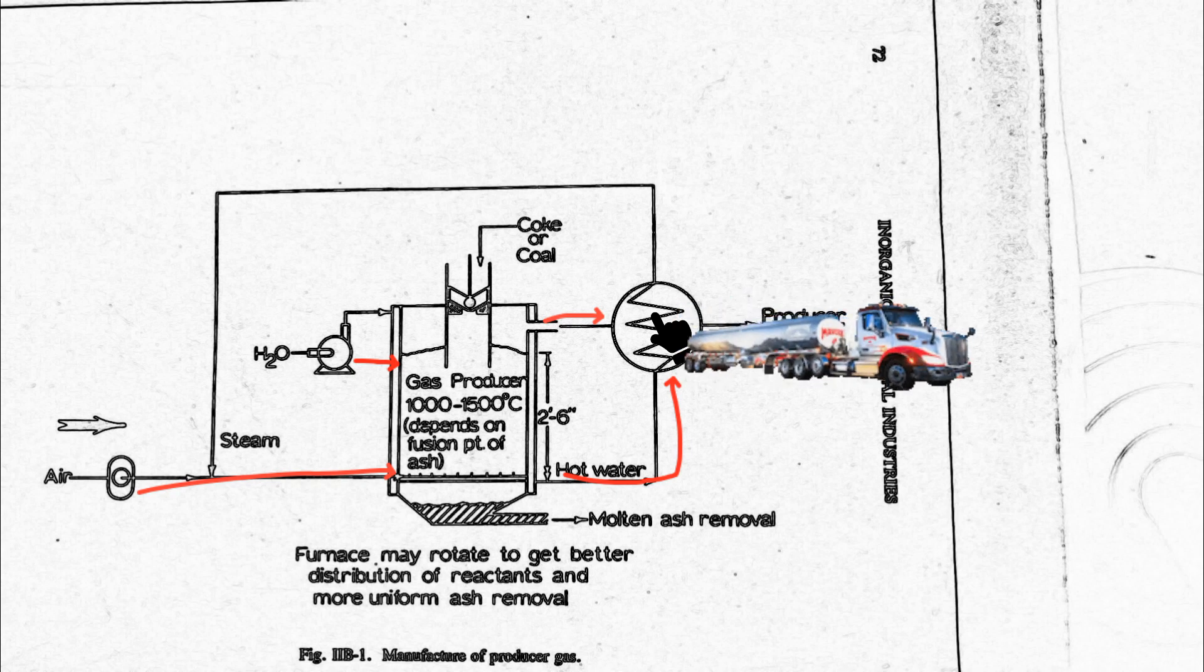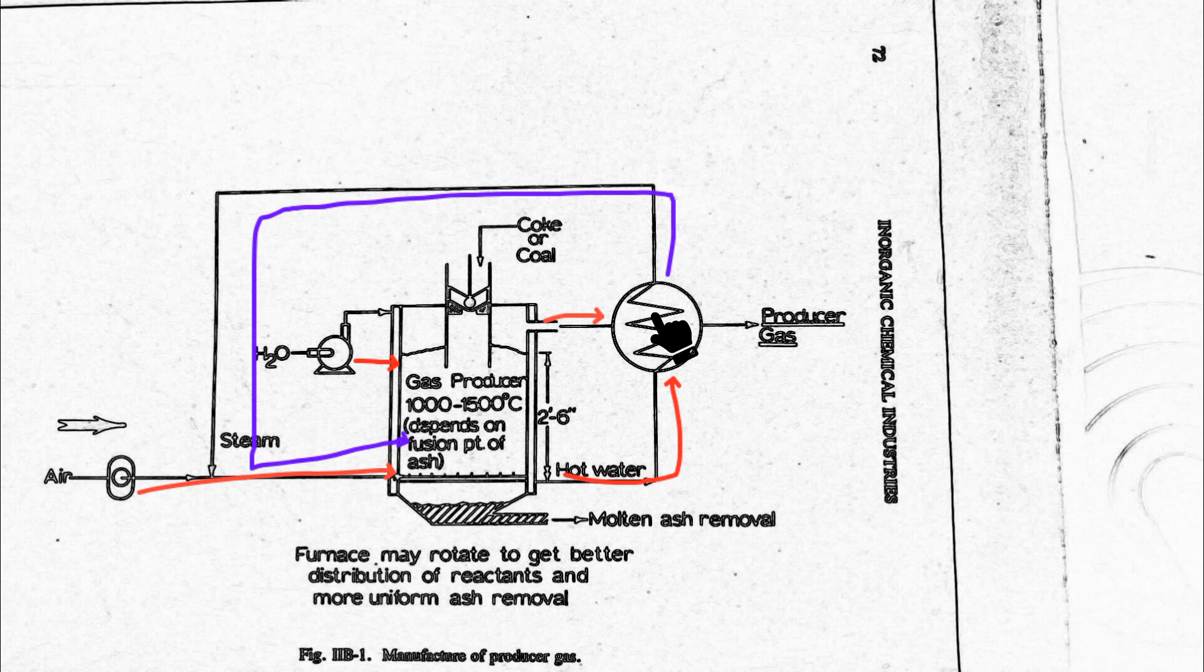The producer gas obtained from the heat boiler is stored and the generated steam is directed back into the furnace, contributing to the production of producer gas through steam and feed.